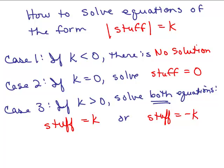Let's summarize. We've got three cases for solving the absolute value of some stuff equals k. First, if k is less than 0, automatically there is no solution. Second, if k equals 0, then whatever is inside the absolute value has to equal 0. Third — the case we worked on first — if k is greater than 0, solve two equations: stuff equals k or stuff equals negative k. In all cases, make sure the absolute value sign is isolated on one side of the equation equaling some number.